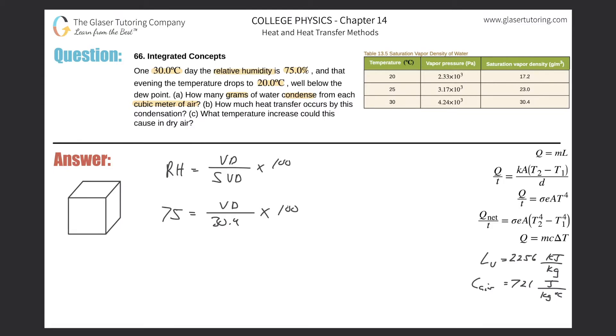And then multiply that by 100. So solving now for the vapor density here, we would just have to basically do 75 times 30.4 divided by 100. And we get about 22.8. So the vapor density is 22.8 grams per cubic meter.